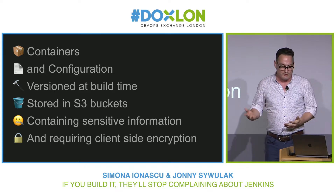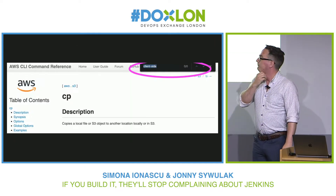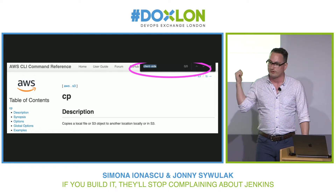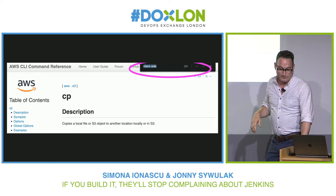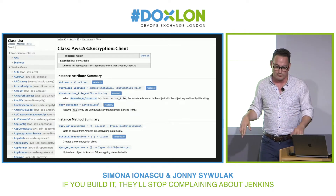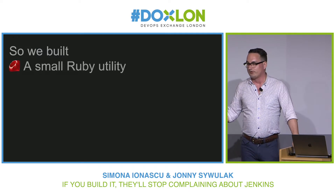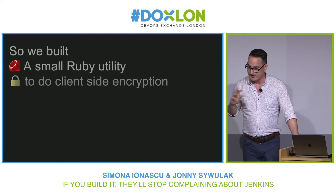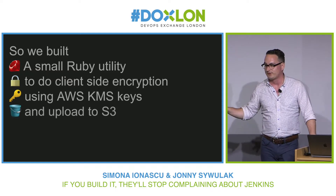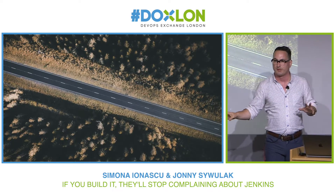That sounded easy enough — I really thought the AWS CLI would do it, but it didn't at the time and I don't think it does now. The Ruby SDK did, and I think the other SDKs do as well. So we just built a really straightforward Ruby utility that did the encryption using KMS and uploaded to S3. That was it. Super straightforward, not complicated at all.